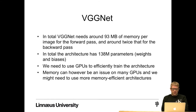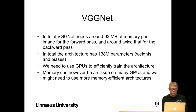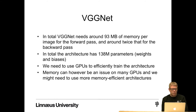In total, VGGNet needs around 93 MB of memory per image for the forward pass and around twice that for the backward pass where we learn the weights. In total, the architecture has 138 million parameters — weights and biases. We need to use graphical processing units to efficiently train the architecture. Memory can however be an issue in many GPUs and we might need to use more memory-efficient architectures.